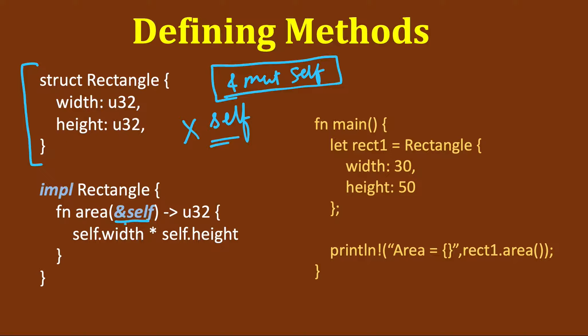In this case it's ampersand self. The definition is similar to the earlier function definition, but here you see that it's wrapped inside an impl and this name is of this struct.